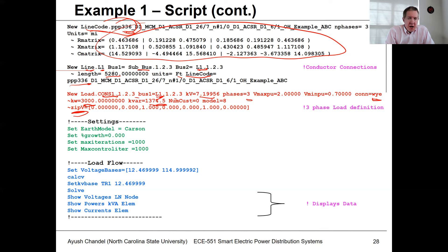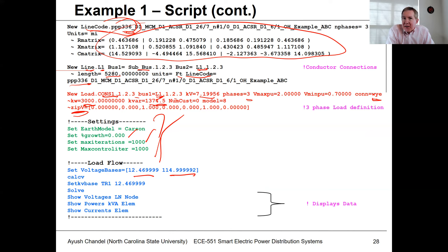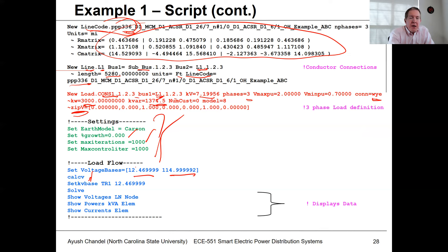There are other settings you can include here. You can specify the earth model as Carson, give a growth factor, maximum iterations, and other standard values. You also need to enter what you want to use as the voltage basis. In this particular system, there's 115 kV as one voltage base and 12.47 kV as another. You define what voltage levels you want in the model — you're not specifying where these voltage bases are in the circuit, just what levels you want. Basically what you're doing is triggering some internal calculations that help set up your per-unit system.